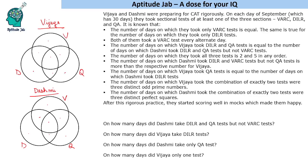The number of days on which they took only VARC tests is equal, so let us call these numbers A and A. Similarly, the number of days on which they took only DILR tests is equal, so let us call these B and B.